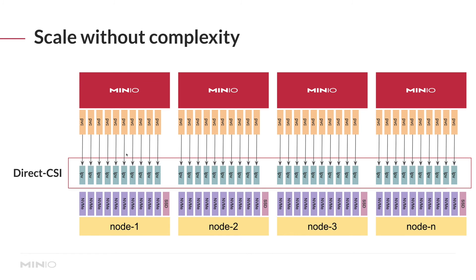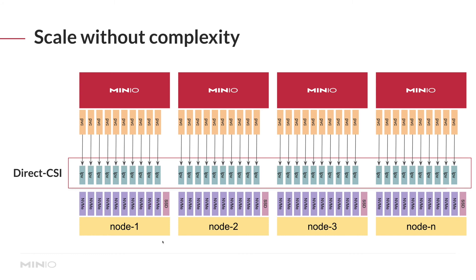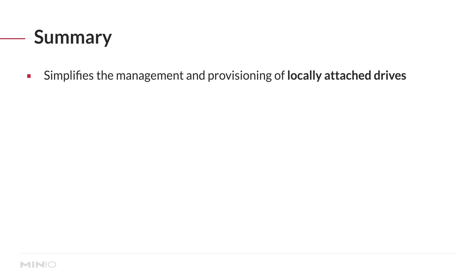Getting started is simple: just tell Direct CSI which nodes or drives across nodes you want it to manage. If your infrastructure is uniform, there's no complicated setup. When scaling, you fire up the Direct CSI CLI, format the new drives, and applications can immediately expand into those new nodes. You don't need to add any additional complexity or extra software — once the drives are formatted, everything is local between the application and the drives.